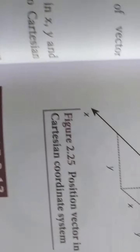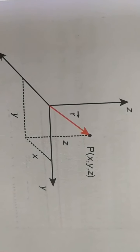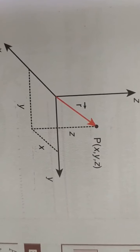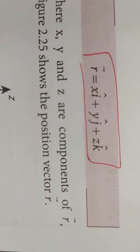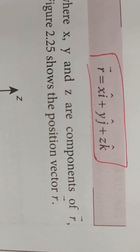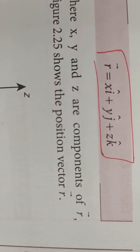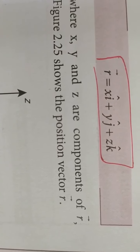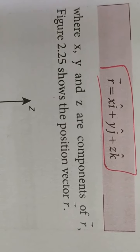See this diagram. Here P is the point and the coordinates are x, y and z. Then the position is given by the formula r vector equals x i-cap plus y j-cap plus z k-cap, where i-cap, j-cap and k-cap are unit vectors. This vector represents the position of a particle at this instant.